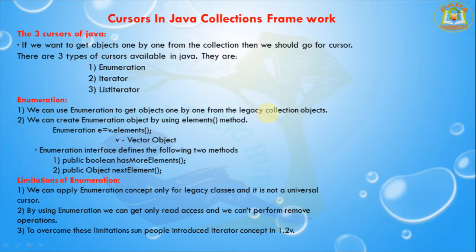We can use Enumeration to get objects one by one from legacy collection objects. Legacy collection objects means Vector and Stack — those are the legacy collection objects. There are more available in the Map as well. The Enumeration is used to get objects one by one from legacy collection objects. We can create the Enumeration object by using the elements() method.